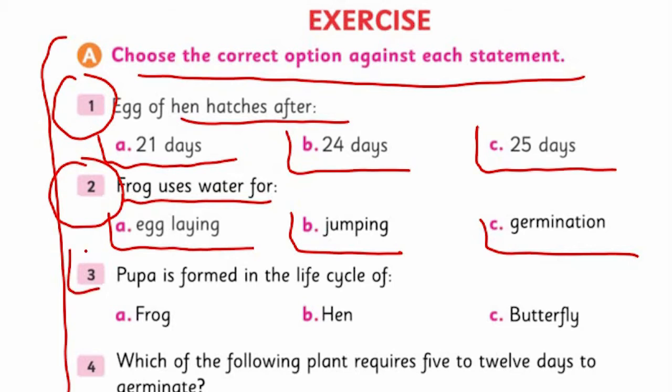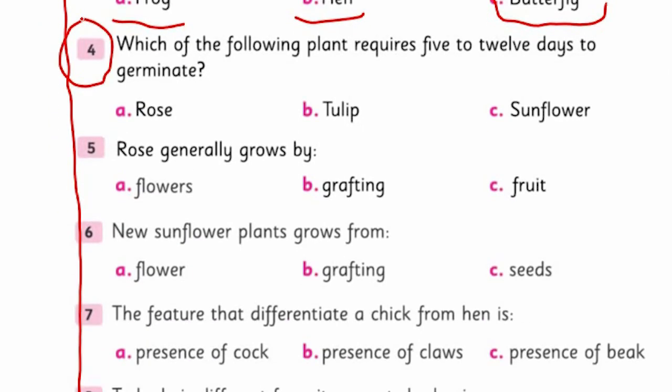Question three: Pupa is formed in the life cycle of what - frog, hen, or butterfly? You've studied different life cycles and even watched the video, so I'm sure you understand and will answer correctly. Question four: Which of the following plants requires five to twelve days to germinate? Read the text carefully. If you've read it, you can answer. If not, review the life cycle section to find the answer. Question five: Rose generally grows by flower, grafting, or fruit?